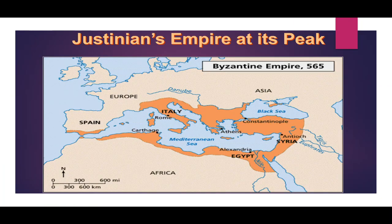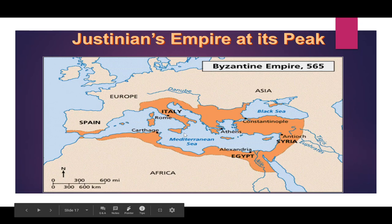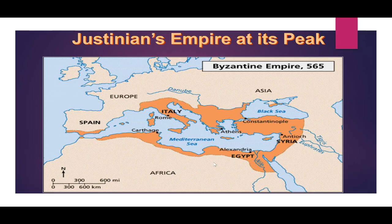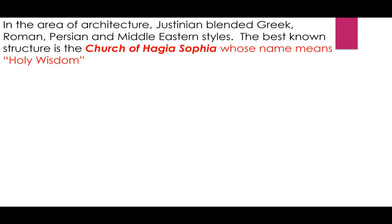Here is Justinian's empire at its peak around 565 AD. He covered all of North Africa again, parts of Spain, Italy, Rome, Constantinople, and Asia Minor — a huge area. He even recovered the old Roman city, though the Byzantines would not be able to hold onto this territory for very long.